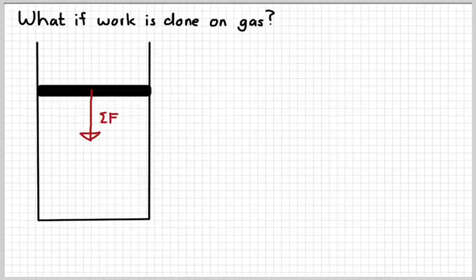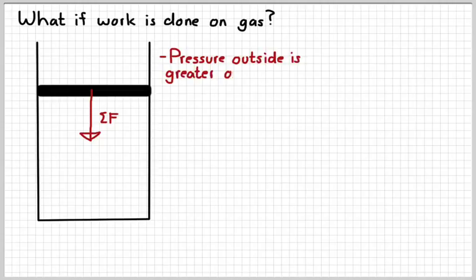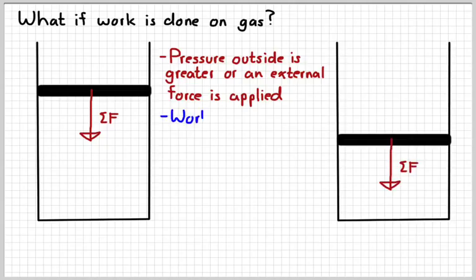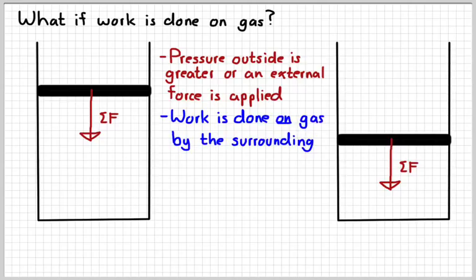What happens if we actually do work on the gas? Like what if we turn this arrow for net force around? That could happen if the pressure on the outside is greater or if there's an external force applied to the piston. So we go from the picture on the left to the picture on the right, which means work is done on the gas by the surroundings. That means the gas gets compressed or squeezed.